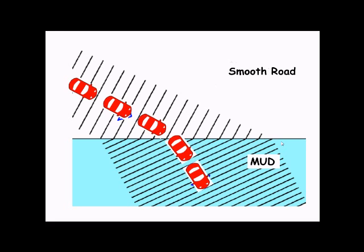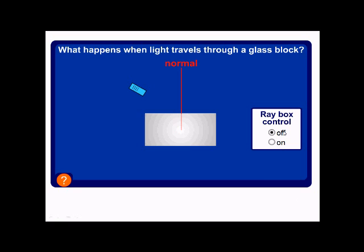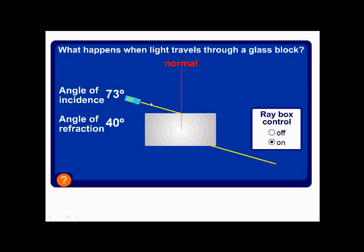Now just to show you how this angle changes, we've got our ray box here. If we start off with an angle of incidence of zero, you'll notice that the ray of light just goes straight through and the angle of refraction is zero. But as we increase this angle of incidence, the angle of refraction starts to increase.